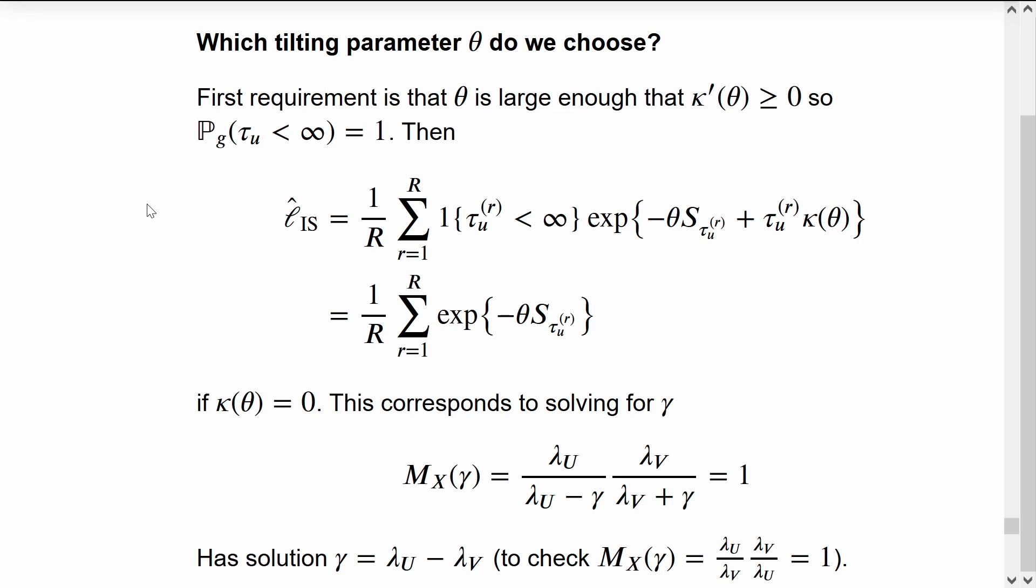This corresponds to solving for the moment generating function taking a value of 1, and we'll say that happens at the value of gamma. Solving this, we find that gamma is lambda_U subtract lambda_V.